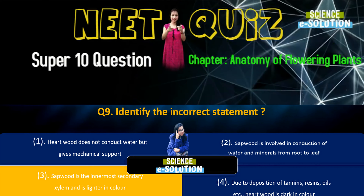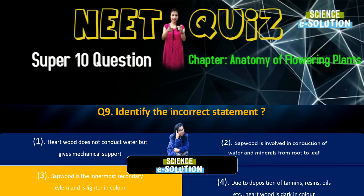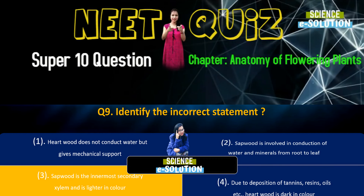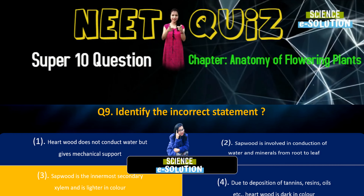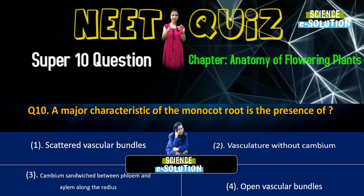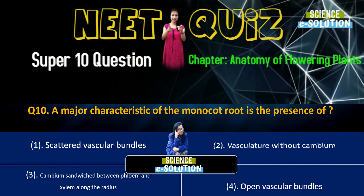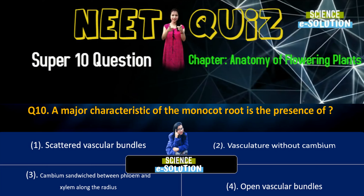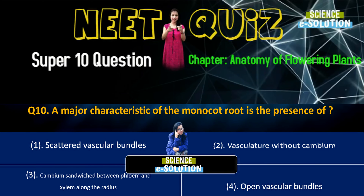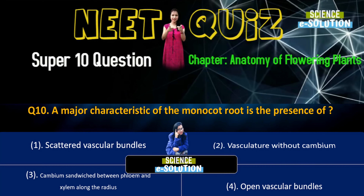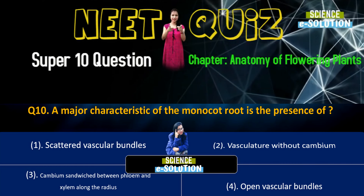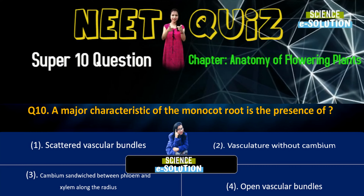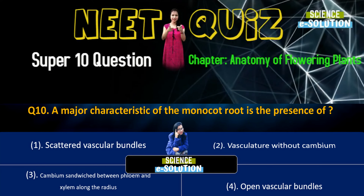Moving on to our next question: Plants having little or no secondary growth are — grasses, cycads, conifers, or deciduous angiosperms? Option number one. Grasses have little or no secondary growth.